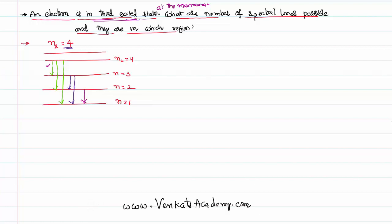How many spectral lines are possible? One, two, three, four, five, and six. That implies the number of possible spectral lines is equal to six.